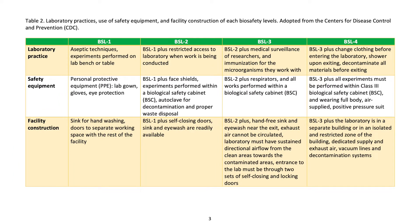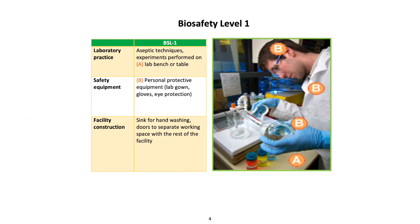Laboratory practices, use of safety equipment, and facility construction for each biosafety level are adopted from the Centers for Disease Control and Prevention (CDC). BSL 1 laboratory practice: aseptic techniques; experiments performed on lab bench or table. Safety equipment: personal protective equipment (PPE) including lab gown, gloves, and eye protection. Facility construction: sink for hand washing, doors to separate the working space from the rest of the facility.